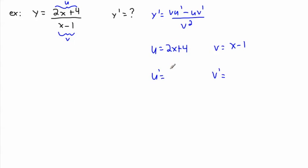The derivative of 2x plus 4: the 1 comes in front making it 2, times x to the power of 0, which is 1. The constant disappears, so it's just 2. In the same way, v prime is just 1, and the constant goes poof, disappears.